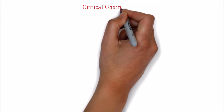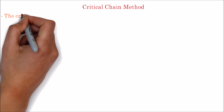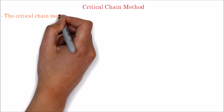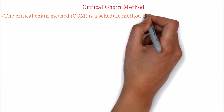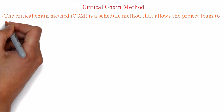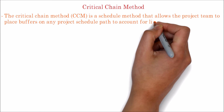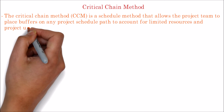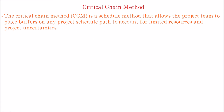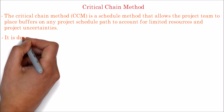Let's look into the critical chain method in this video, which is another type of network diagram method. The critical chain method is a schedule method that allows the project team to place buffers on any project schedule path to account for limited resources and project uncertainties.